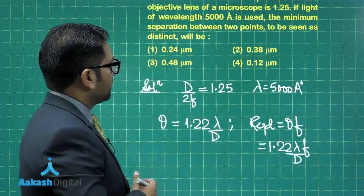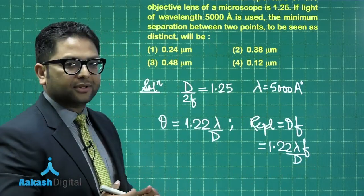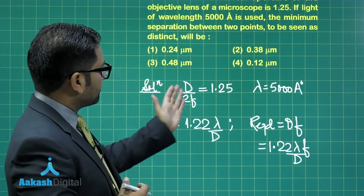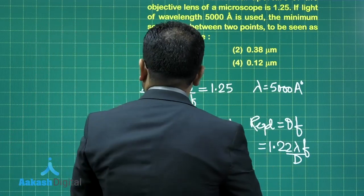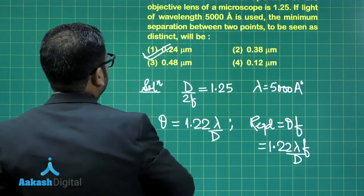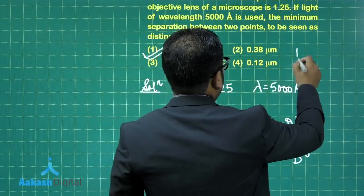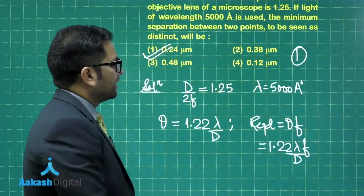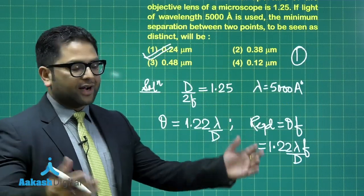All you need to do is that, you put all those given values, because D by F can be plugged as 2.5, lambda is there. You do all those things, and the answer will come out to be 0.24 micrometer. So option number one is the correct option for this. Let's now move to question number two.